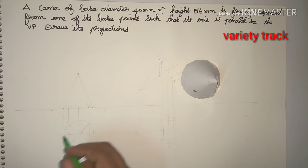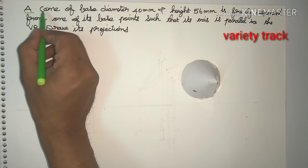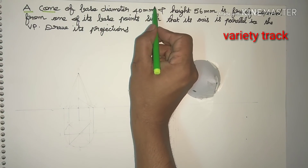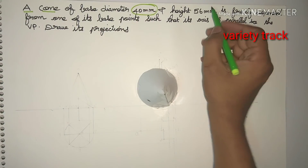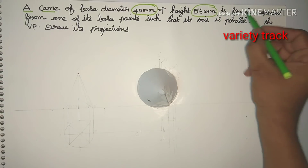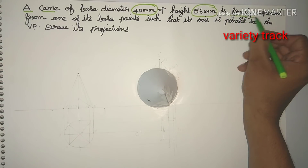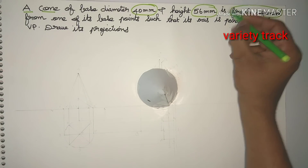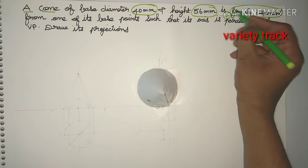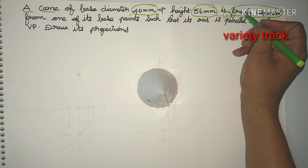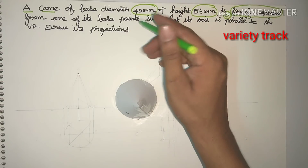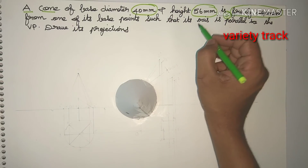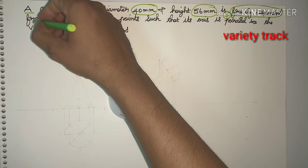Welcome to Variety Track. A cone of base diameter 40mm and height 56mm is freely suspended from one of its base points, such that its axis is parallel to VP.